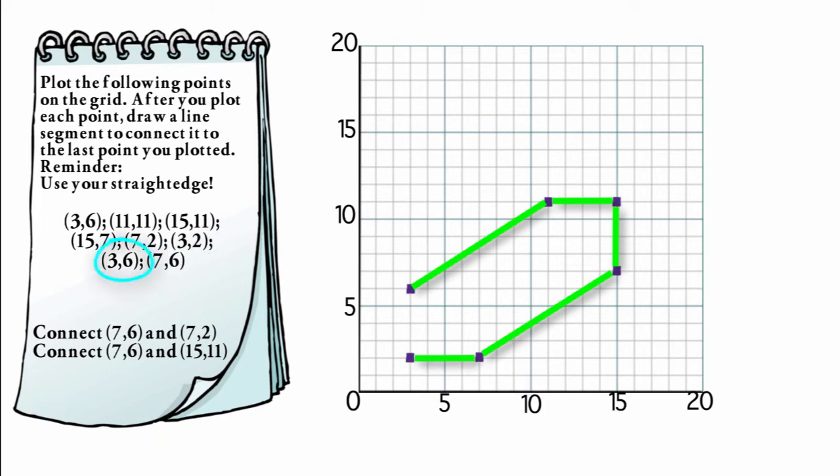And then the next coordinate is (3,6). I'll start at the origin again. I'll go over 3 and I'll go up 6. And I'll connect that new dot to the previous dot that I graphed.